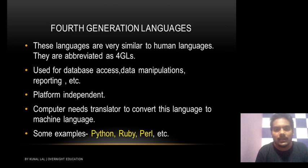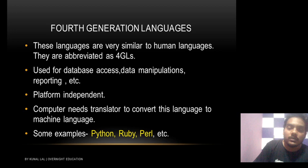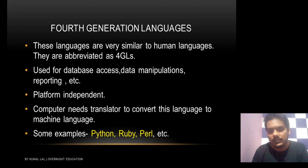Platform independent means the program is not restricted to just one computer — unlike machine language which was machine dependent. The computer needs a translator to convert fourth generation language into machine language, since the computer only understands machine language. Some examples of fourth generation language are Python, Ruby, and SQL. So Python, Ruby, and SQL are all examples of fourth generation language.